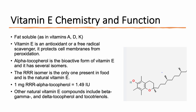Alpha-tocopherol is the most important one, and it has about eight isomers. Isomers mean it's the same compound, the same number and exact atoms, but they are arranged differently. The only one that is present in food is the RRR isomer. This is called the natural vitamin E, and one milligram of RRR alpha-tocopherol equals 1.49 international units.